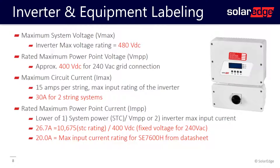The IMAX takes a little bit of calculation. Because the optimizer can output up to 15 amps but no more, we need to account for how many strings we're putting inside the inverter. In this example, we have two strings, so our IMAX is going to be listed as 30 amps.